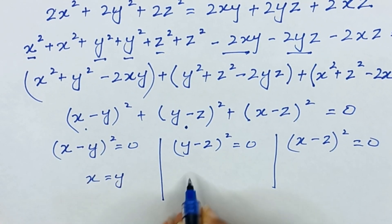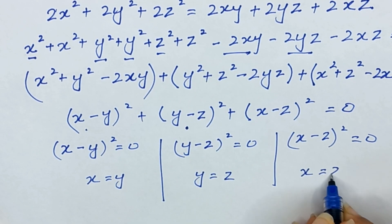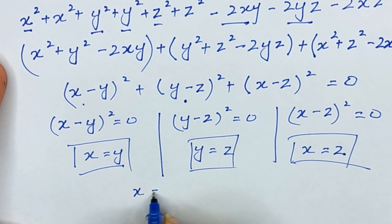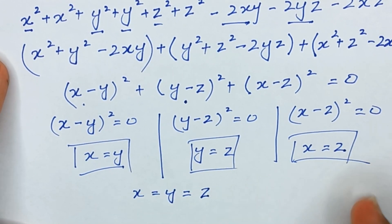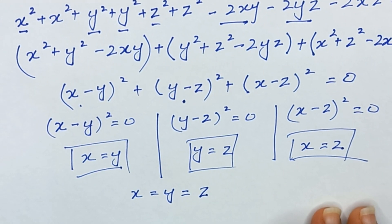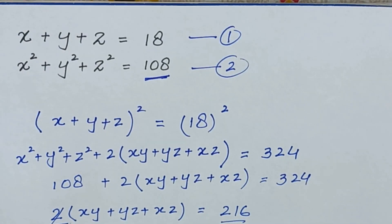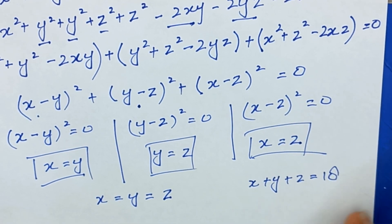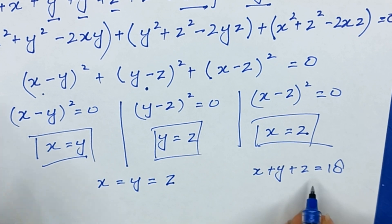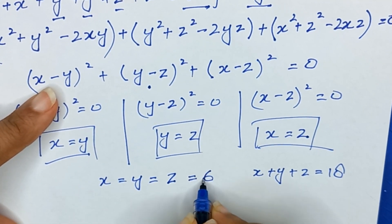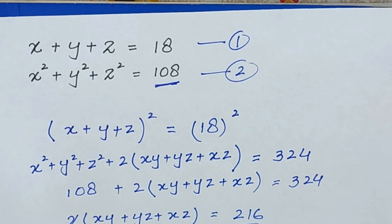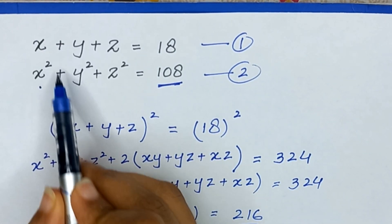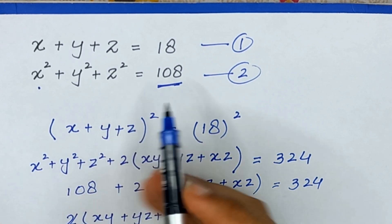From these results, x equals y, y equals z, and x equals z, meaning x equals y equals z. Substituting into equation one, x plus y plus z equals 18, and since all three are equal, each variable equals 6. We can verify: 6² plus 6² plus 6² equals 36 plus 36 plus 36 equals 108, which satisfies equation two.